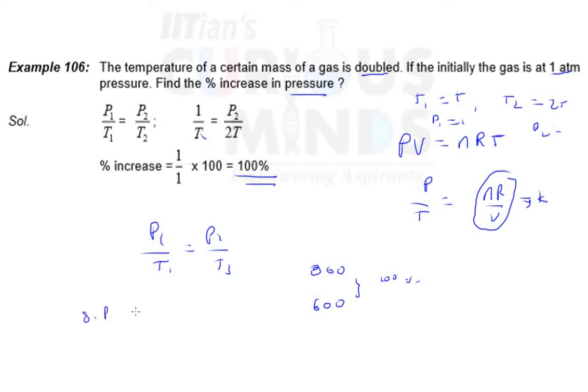So basically there will be pressure P2 minus P1 upon P1 into 100. So 2 minus 1, which is 1, upon 1 times 100, so 100 percent. Whenever anything gets doubled, the percentage increase is 100 percent. Hope you guys understood this video, thanks so much, bye.